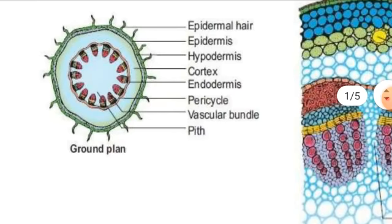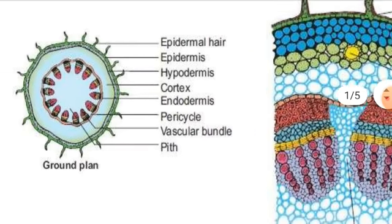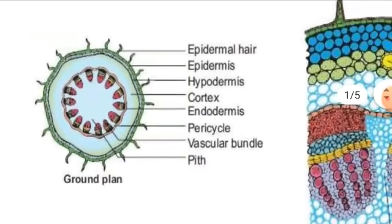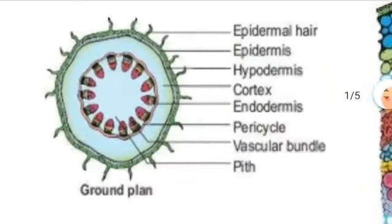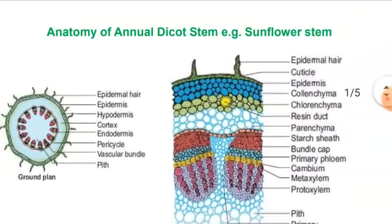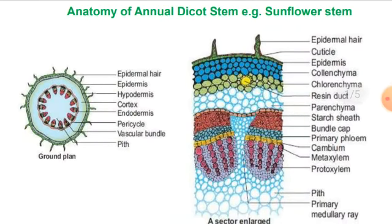Here there are two diagrams. One is the outline or small view, and another is the cellular details view. If there is a normal secondary growth, this is the old sunflower stem cross-section. The outermost protective covering is the epidermis. The secondary growth is seen in the dicot stem.